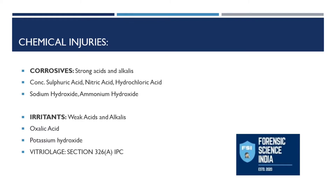Irritants cause slight irritation — for example, weak acids and alkalis. Irritants can also be plant-based or animal-based. Plant irritants include various plants that cause scratching, allergies, and certain skin reactions. Animal irritants include flies, honeybees, and similar insects. Weak acids and alkalis such as oxalic acid and potassium hydroxide also fall under irritants.